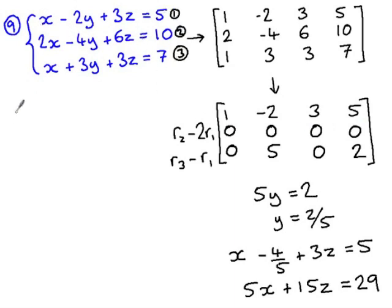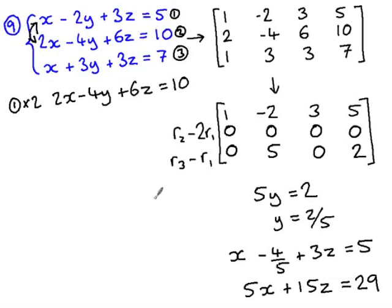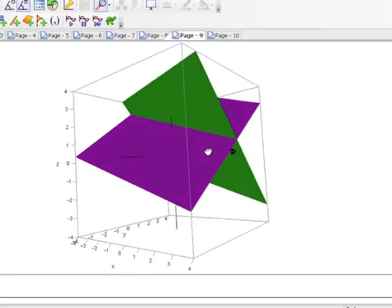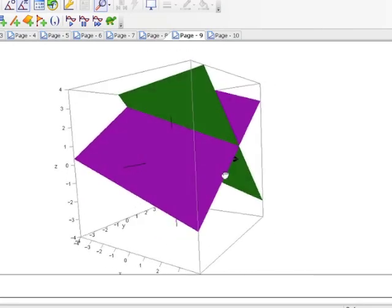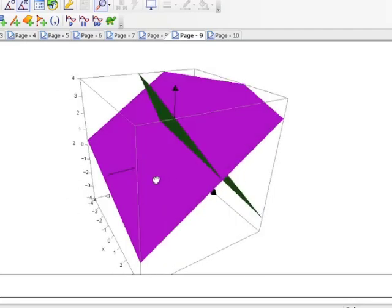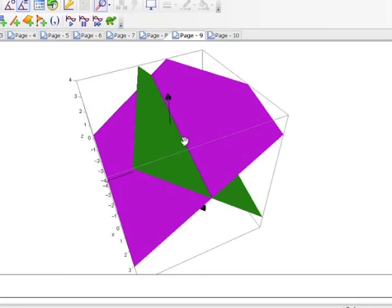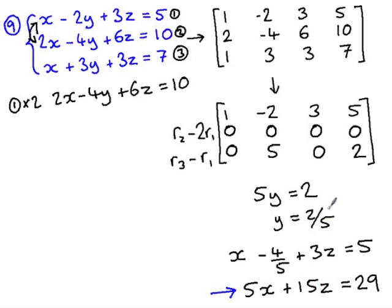This is just like taking equation one and multiplying by two, which is the same as equation two — so we've defined the same plane twice. But the third equation represents a different plane, and it intersects the first plane along the line five x plus fifteen z equals twenty-nine. The pink plane on the graph is the graphical form of those first two equations, and the green plane is x plus three y plus three z equals seven. You can see that the two planes intersect along the line. There are still an infinite number of solutions — any point along that line with y equal to two-fifths and x and z connected by that equation will satisfy the three original equations.